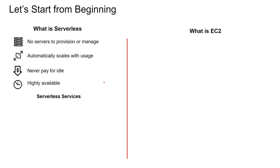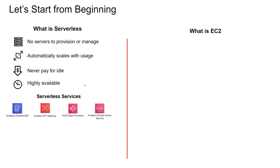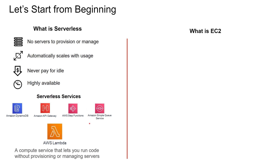So what are some of the serverless services? Folks have this misconception that Lambda is the only serverless service, which is not true. Any AWS service which satisfies these four criteria is actually part of the serverless ecosystem. Some of these services include Amazon DynamoDB, API Gateway, AWS Step Functions, and Amazon SQS, and there are many more. However, for this video, we are going to talk about the crown jewel of serverless, which is AWS Lambda.